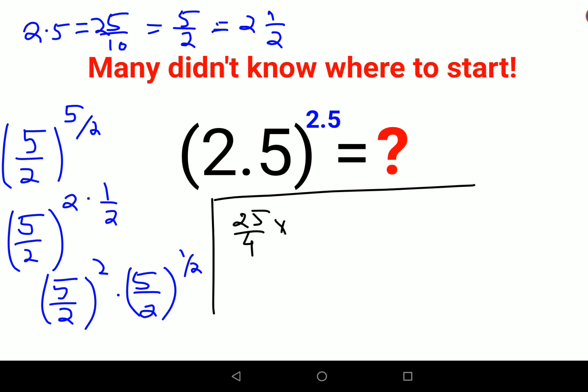So this is eventually written as 25 upon 4 times root 5 upon root 2. But in mathematics, we don't leave roots in the denominator, so we'll rationalize.